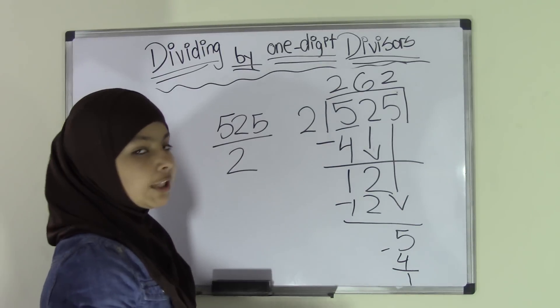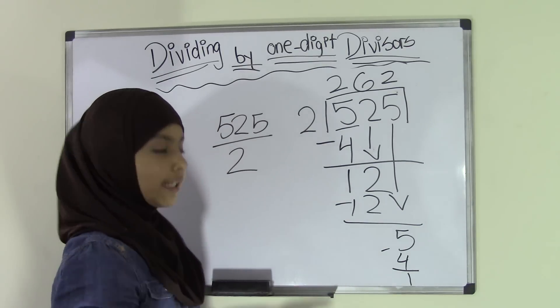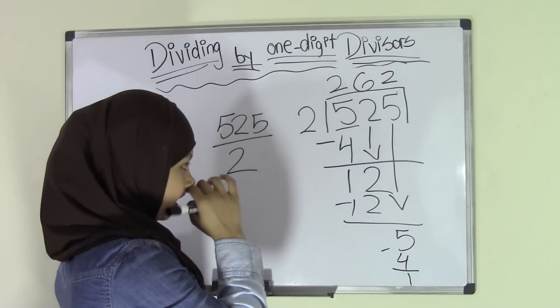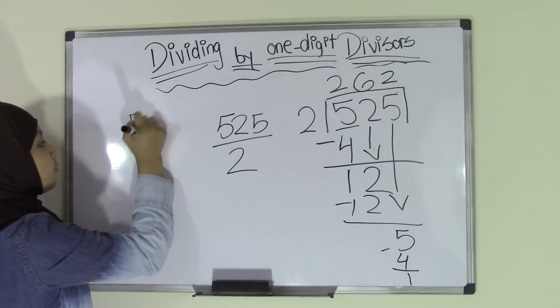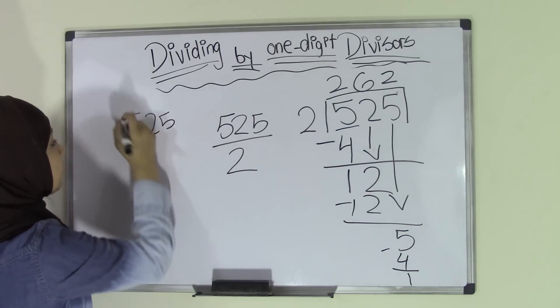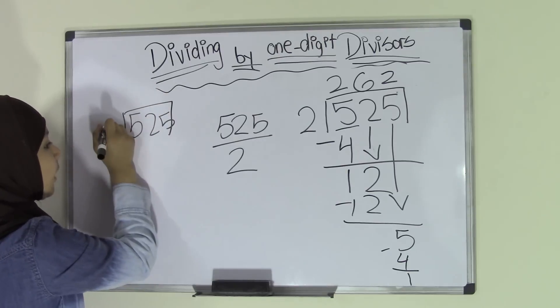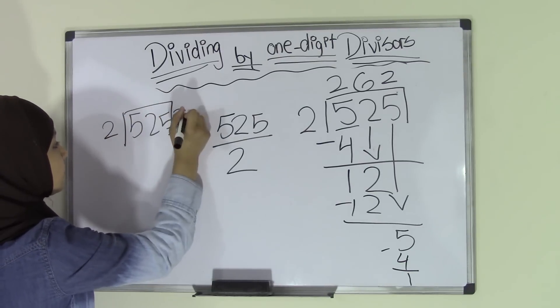But we want to change this into a decimal. So right now I'm out of space here. So I'm going to rewrite this thing over here in a smaller script so that we can fit everything. So 525 and 2.